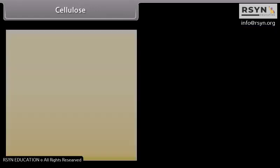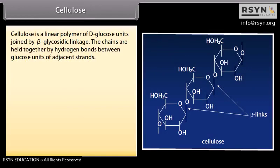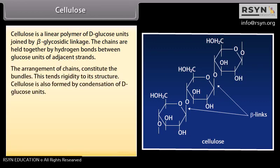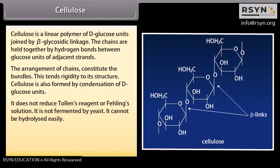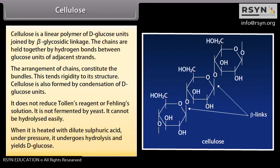Cellulose is a linear polymer of D-glucose units joined by beta-glycosidic linkage. The chains are held together by hydrogen bonds between glucose units of adjacent strands, forming bundles that give rigidity to its structure. Cellulose is also formed by condensation of D-glucose units. It does not reduce Tollens' reagent or Fehling's solution. It is not fermented by yeast and cannot be hydrolyzed easily. When heated with dilute sulfuric acid under pressure, it undergoes hydrolysis and yields D-glucose.